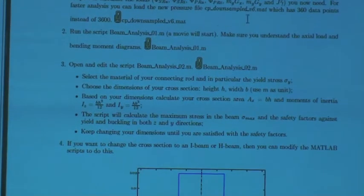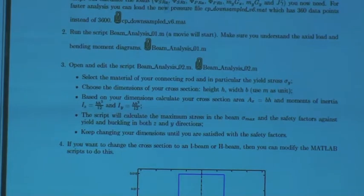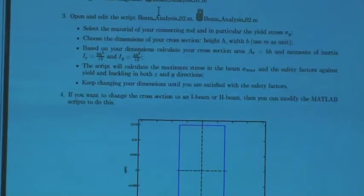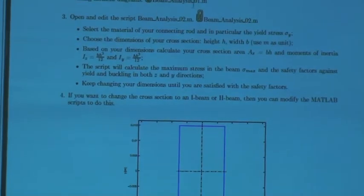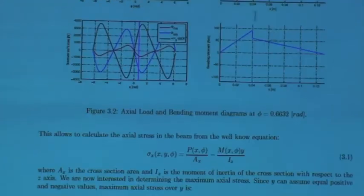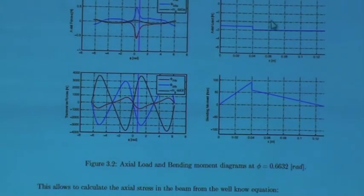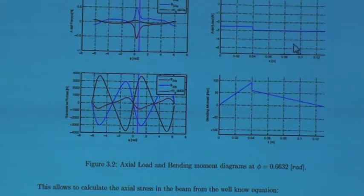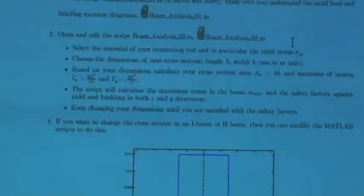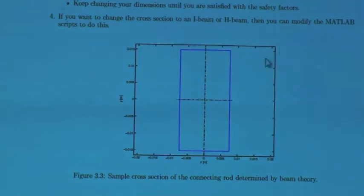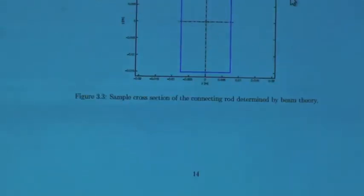So yeah, so just go through, and here is the note, you want to use the CP downsize, because it's 360 points instead of 3,600. And then one of them will do a movie, and it will show you the shear and bending moment diagrams as it goes through the loading condition. So that's essentially the whole beam analysis. So this is just to get you a preliminary design, so you're not starting with 5 feet as your connecting rod, you know, something ridiculous. So you can get a basic idea.